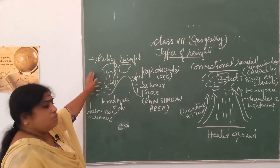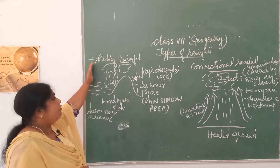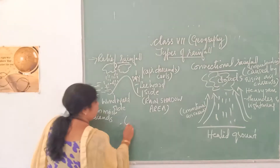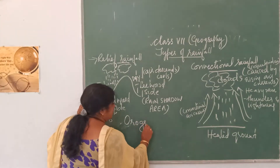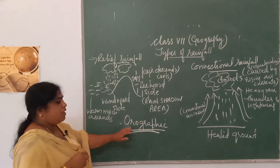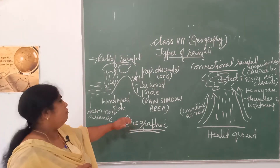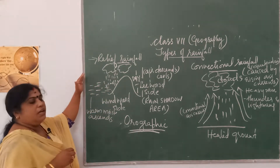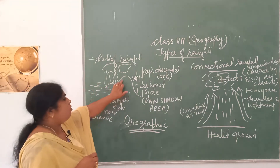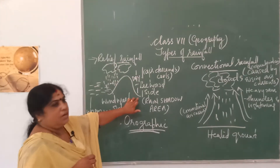So what is relief rainfall, or how does relief rainfall occur? Relief rainfall is also known as orographic rainfall. How does orographic or relief rainfall occur? Relief rainfall usually occurs when moisture-laden winds are being blocked by a barrier or a mountain range.